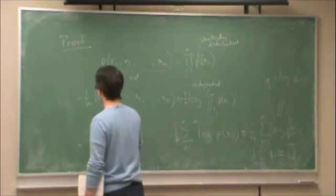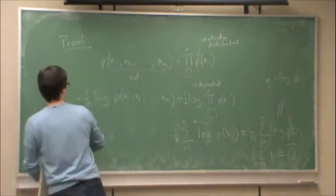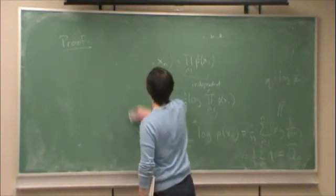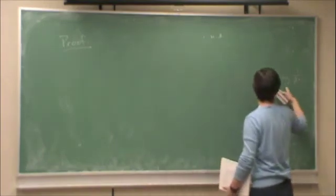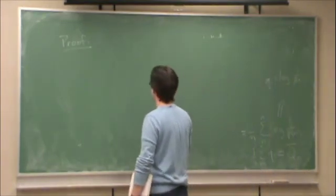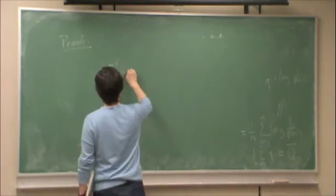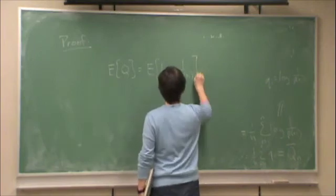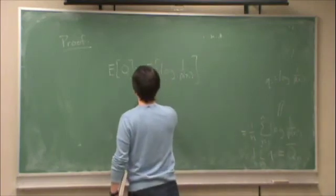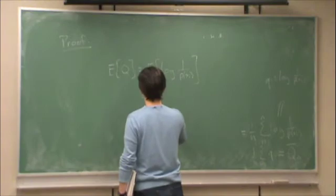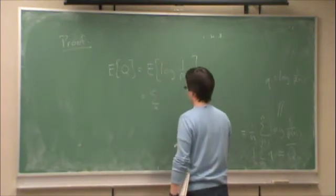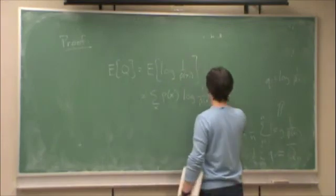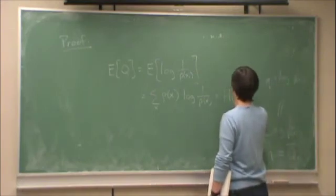So this thing on the left here is the sample mean of q. On the other hand, remember that qi is log P of xi. What's the expected value of q? That's equal to the expected value of log 1 over Pxi. So by expressing it in that form, now this expectation is with respect to x. So that sum from x equals, sum over all values of x, all valid values of x. P of x log 1 over P of x. And what is that? That's entropy. That's the entropy of x.